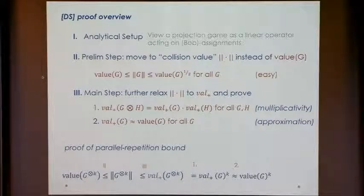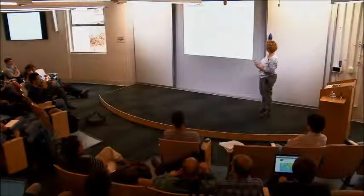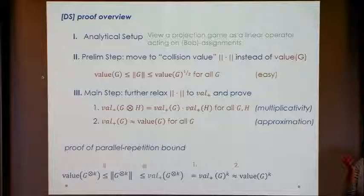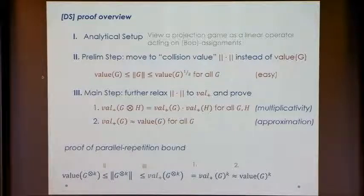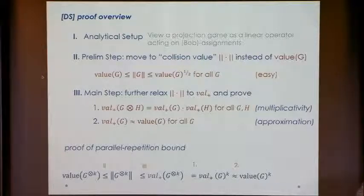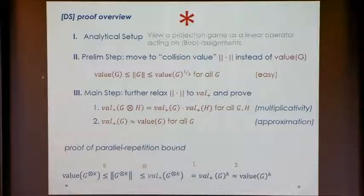To quantumize the proof you just add stars throughout. Now I want to give more details about this proof overview, explaining how we do it classically and then how we extend to the entangled value. To view a game as a linear operator: the first step is to move from a constraint graph to the label extended graph, where each question v is blown up into a cloud of sigma vertices, one for each answer. Each constraint is replaced by a bipartite graph connecting answer beta to answer alpha if that pair satisfies the constraint. This gives the label extended graph — no more constraints, just vertices and edges that completely describe the game.